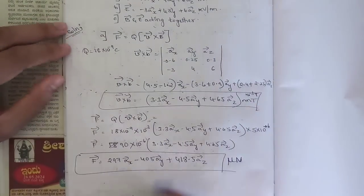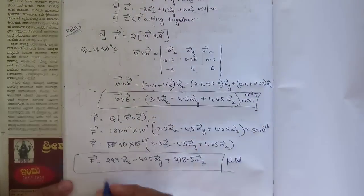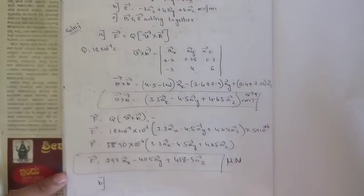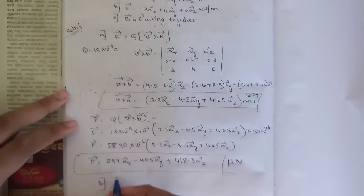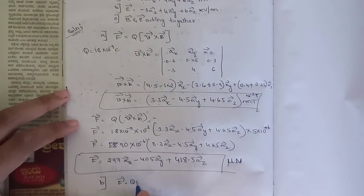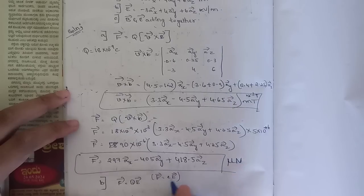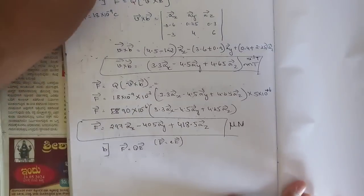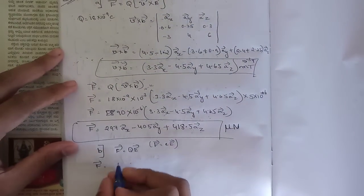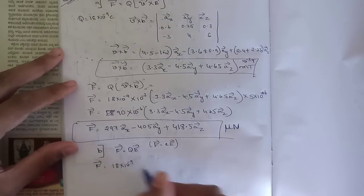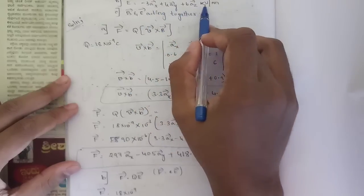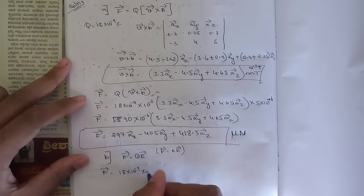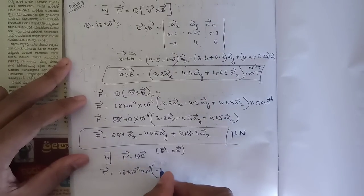For sub-question 2, only the electric field E is given. We use the direct relation F = qE. Here q = 18×10^-9 and E = -3ax + 4ay + 6az kV/m, where kilo means 10^3, so we include 10^3.